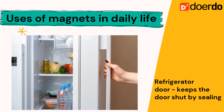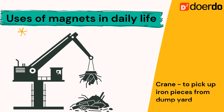Next, we have the refrigerator door, which keeps the door shut by sealing it using magnets. And lastly, with your crane — remember the temporary magnet using soft iron — which is used to pick up iron pieces from a dump yard.